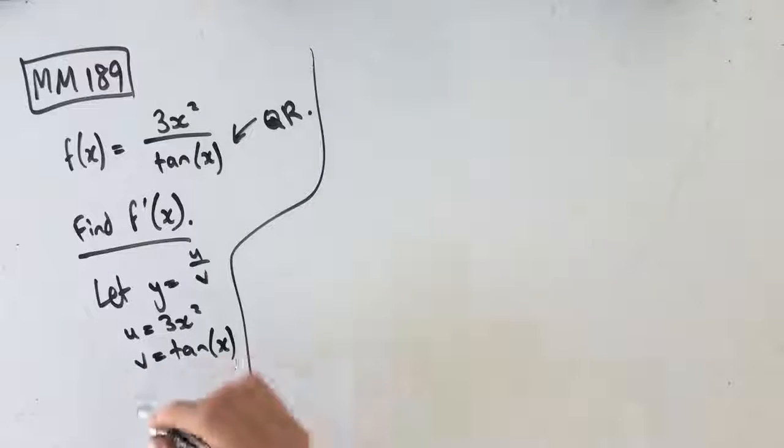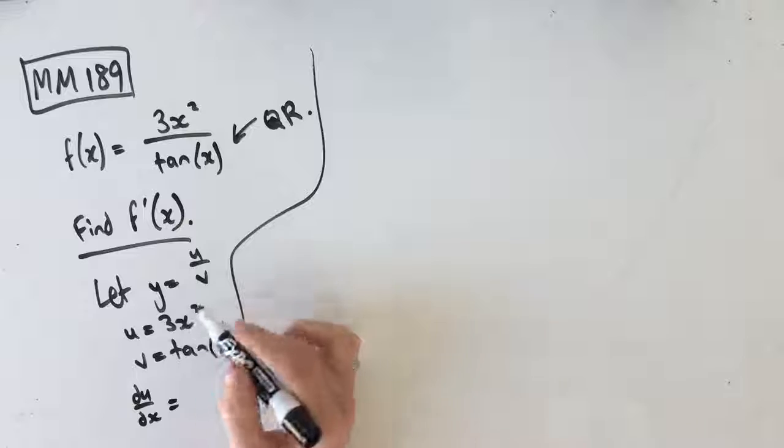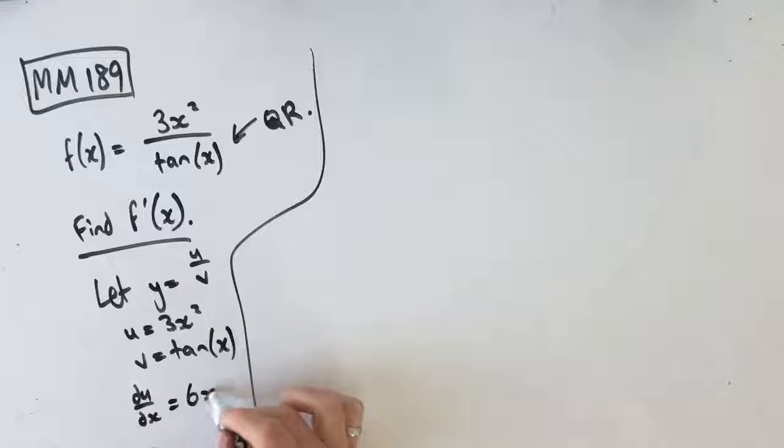So from here we know that, actually, you know what, let's say du dx is equal to the derivative of 3x squared, which is just 6x, and dv dx, which is equal to the derivative of tan x, which is equal to sec squared x. And that should just be on your formula sheet. You don't necessarily need to remember that.